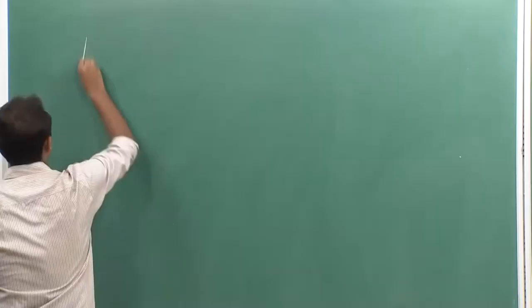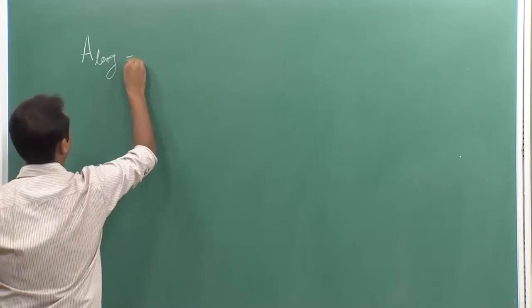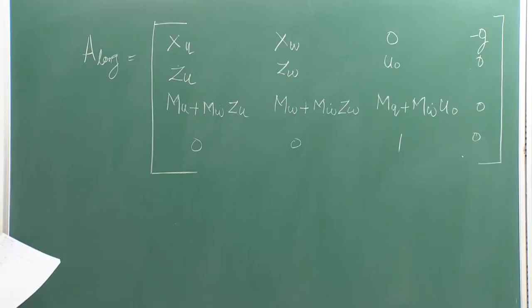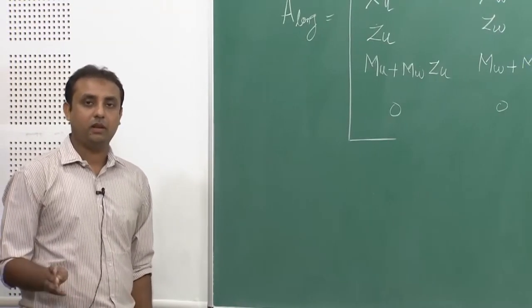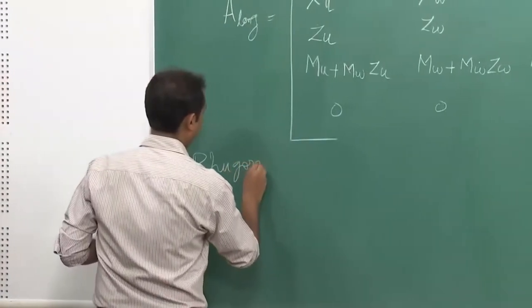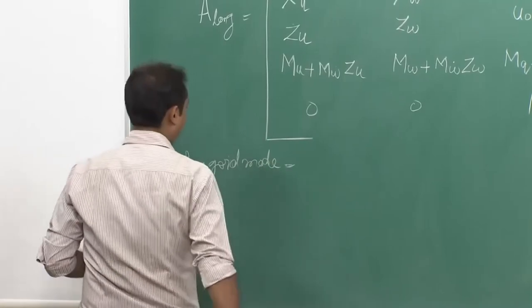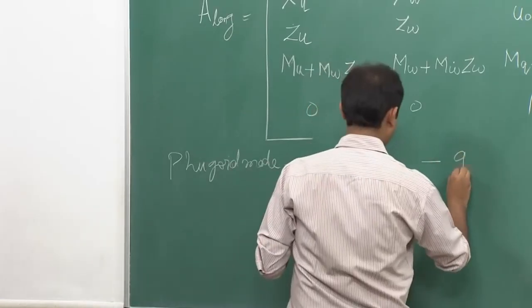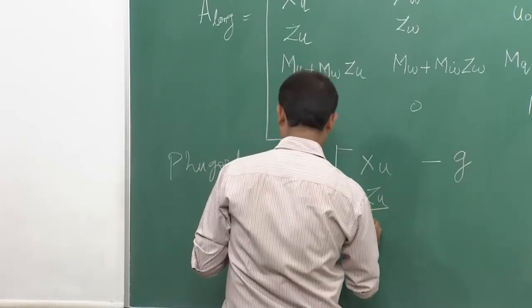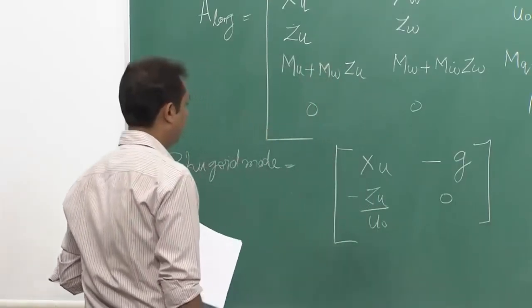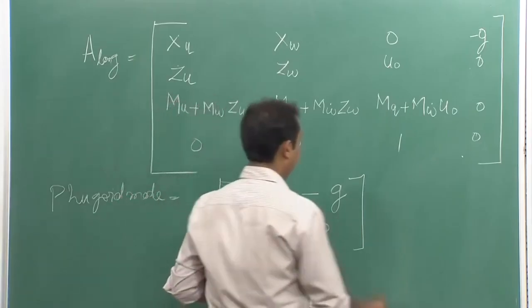In the previous lecture you might have seen the longitudinal matrix. Now in longitudinal mode there are two modes: short period mode and a fugoid mode. The approximation matrix for those are given. For fugoid mode, the matrix will be given by x_u, minus g, minus z_u upon u_naught. This is the matrix for fugoid mode.